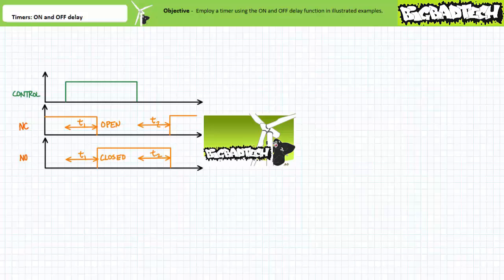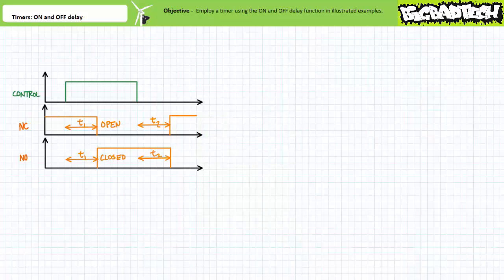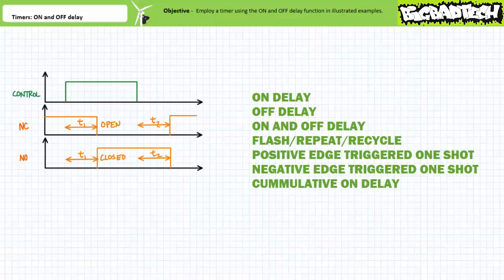Recall that a timer is a control device that exhibits a time-based shift between the assertion of its controlling input and the activation or deactivation of its associated contacts. Timers can perform numerous functions including, but not limited to, on delay, off delay, on and off delay, flash, repeat or recycle, positive or negative edge triggered one shots, cumulative on delays, and more.